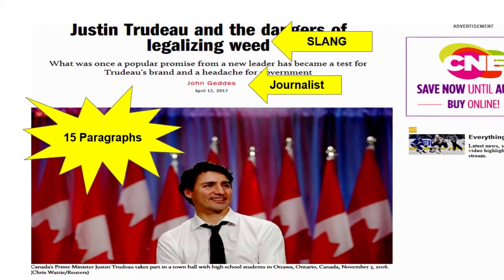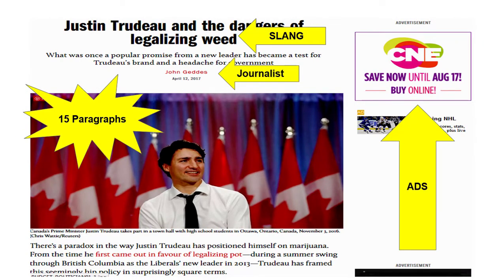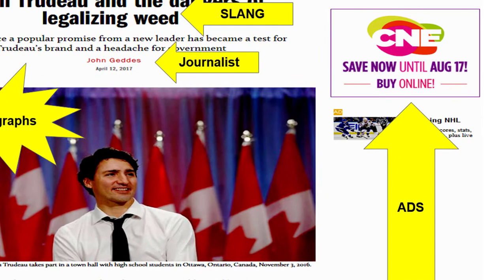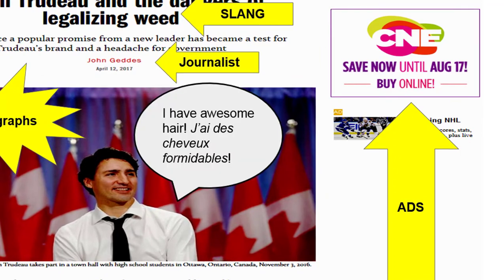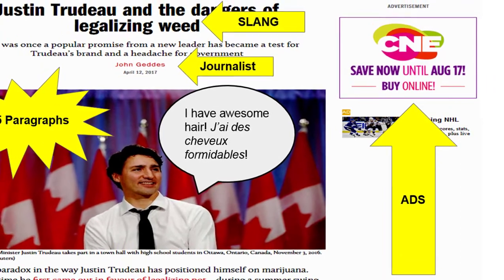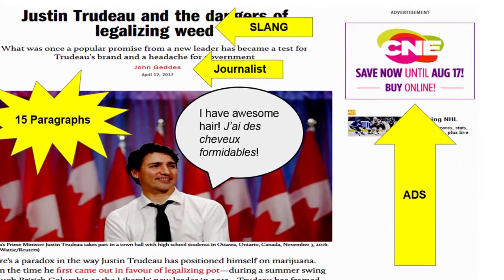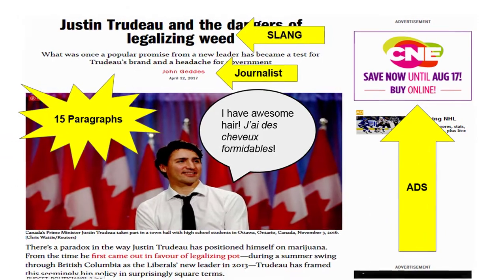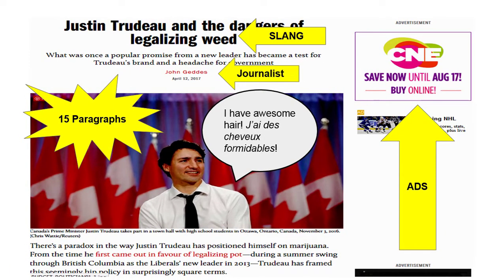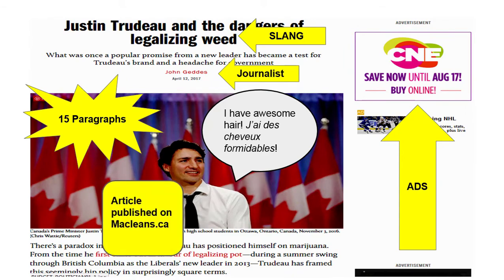Popular articles, unlike scholarly articles, tend to include advertisements as well as glossy photographs or illustrations. If you see a lot of advertisements or extraneous photographs in an article that you are reading, it's probably a popular article. Finally, if you are reading an article from a publication whose title you recognize from newsstands or grocery store checkout lines, then the article you are reading is most definitely from a popular magazine and not from an academic journal.